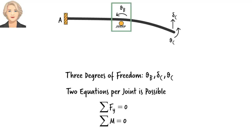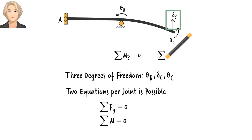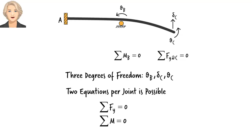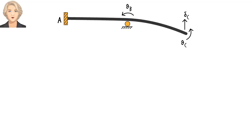Rotation at joint B is one of the degrees of freedom, so we use the moment equilibrium equation at B, since bending moment and joint rotation go hand in hand. Another degree of freedom is the vertical displacement at C, so we write the sum of forces in the y-direction at C equal to zero. And we use the moment equilibrium equation at C since theta_C is a degree of freedom. Here are the three equilibrium equations in terms of member end forces.